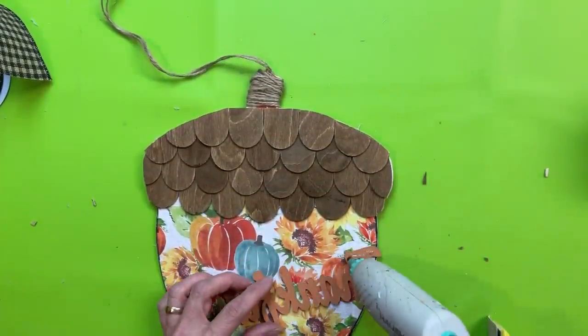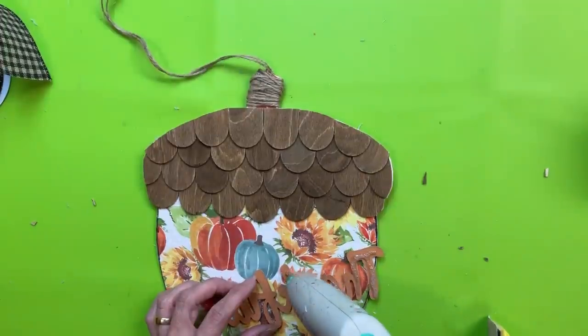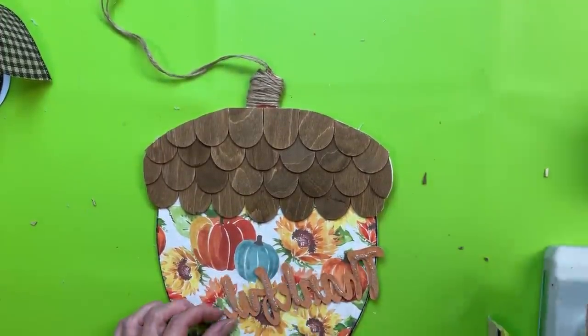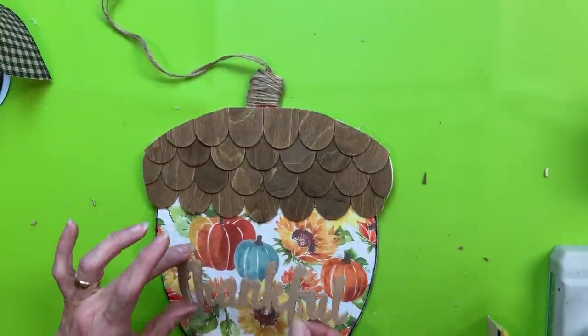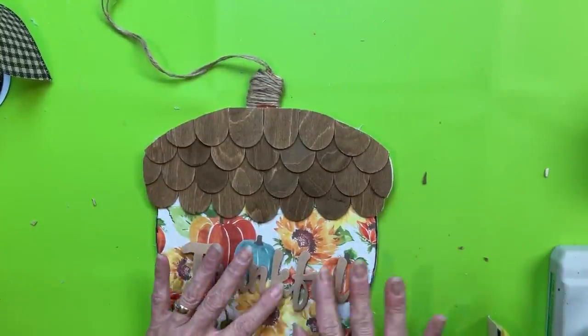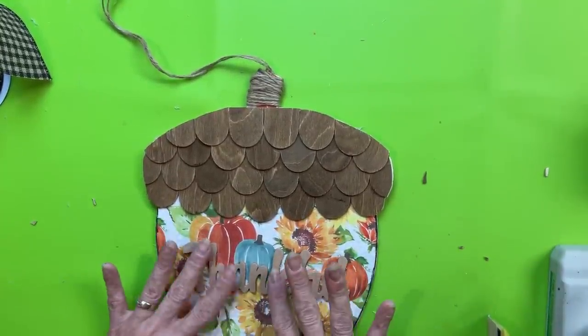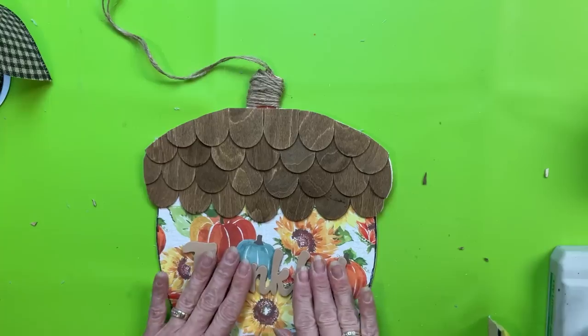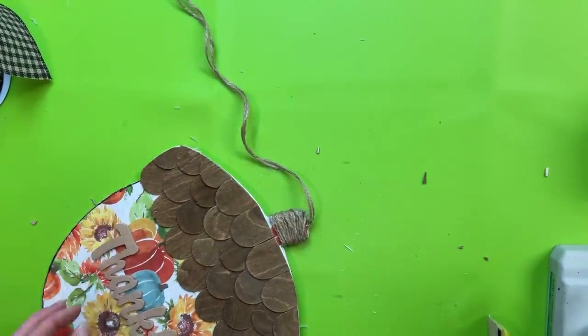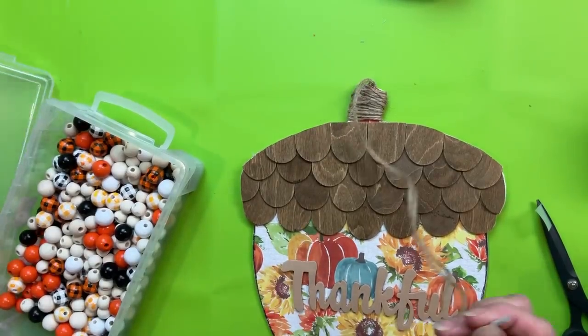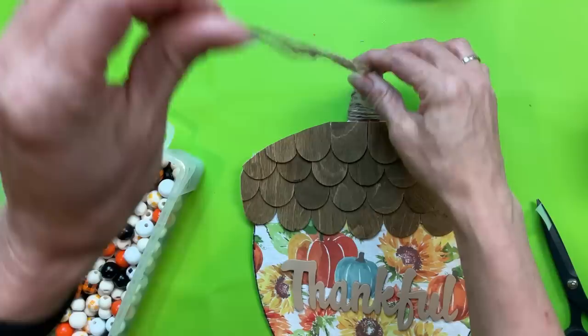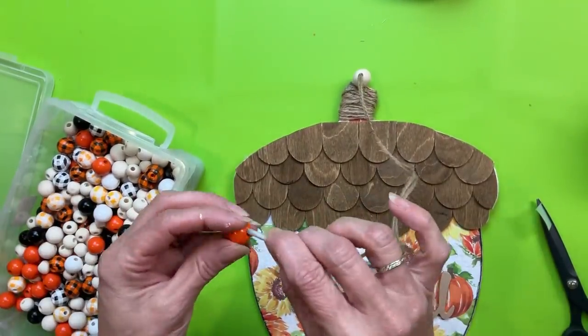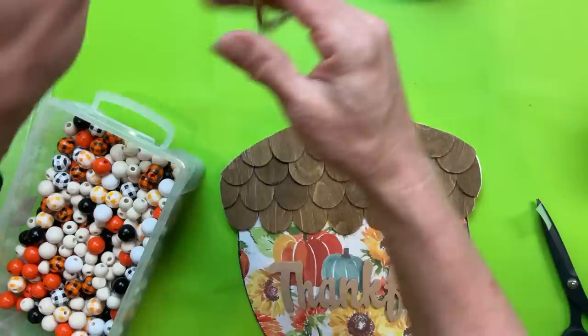Once we have the top all done, now I'm using one of these faux leather words that says thankful. If you can't find these or you'd prefer, you can also use one of the galvanized metal words that is in the fall craft section. The last thing I'm going to do is I'm going to add some wood beads to the hanger string, and I'm going to use that same fall bead mix from Amazon. Just add a few on there for a little more of a decorative touch. Then we'll tie off the knot, and this project will be complete.